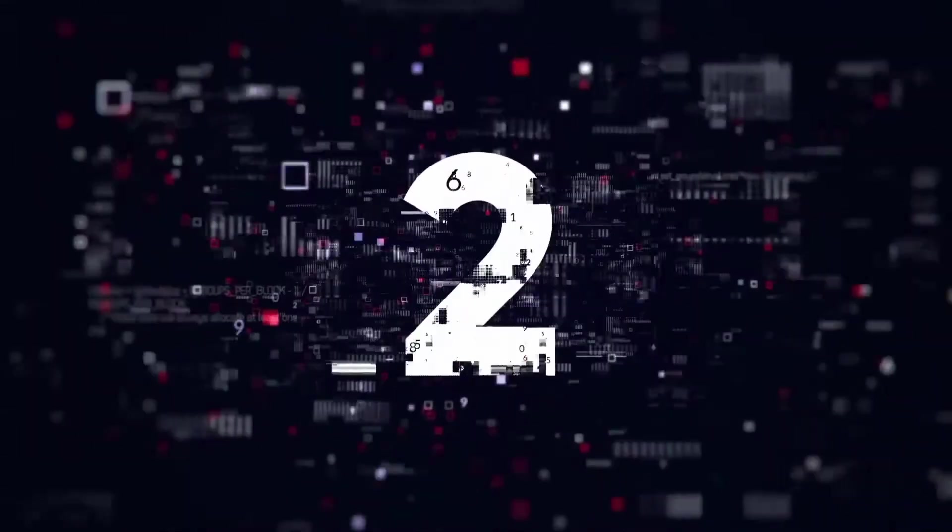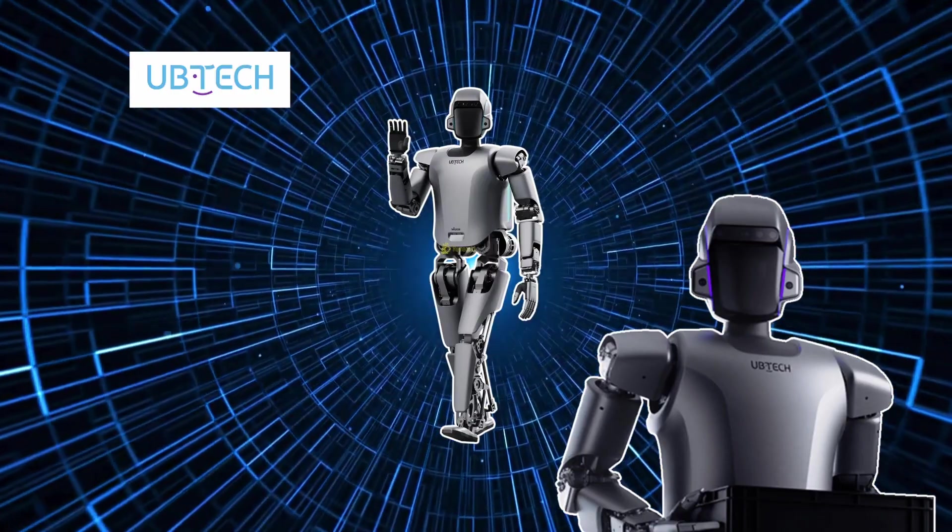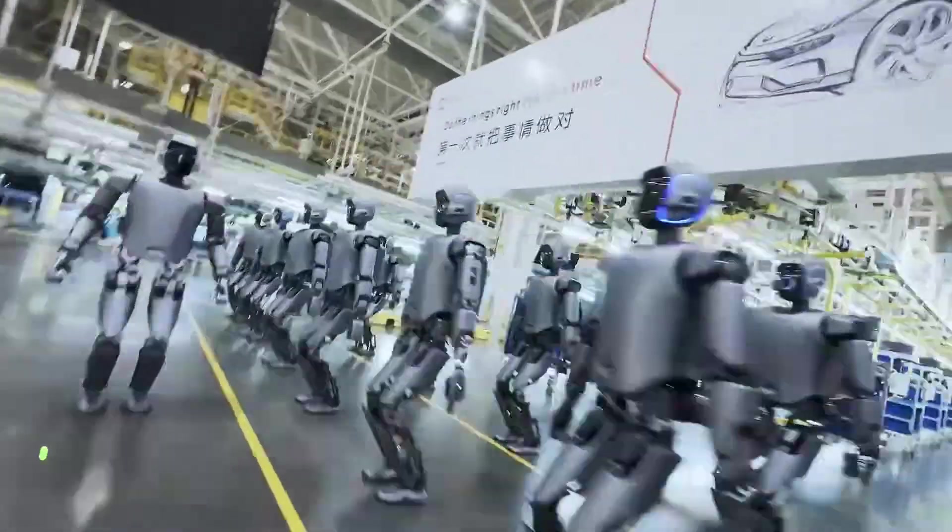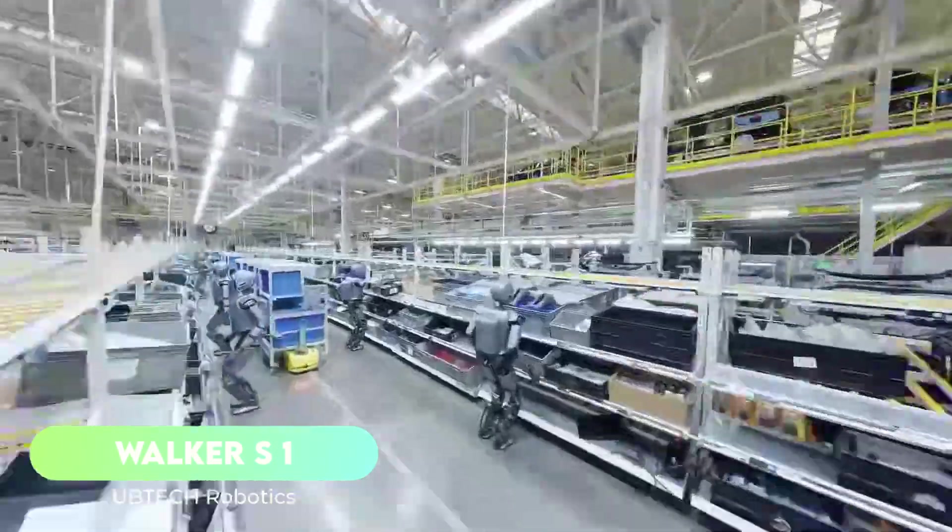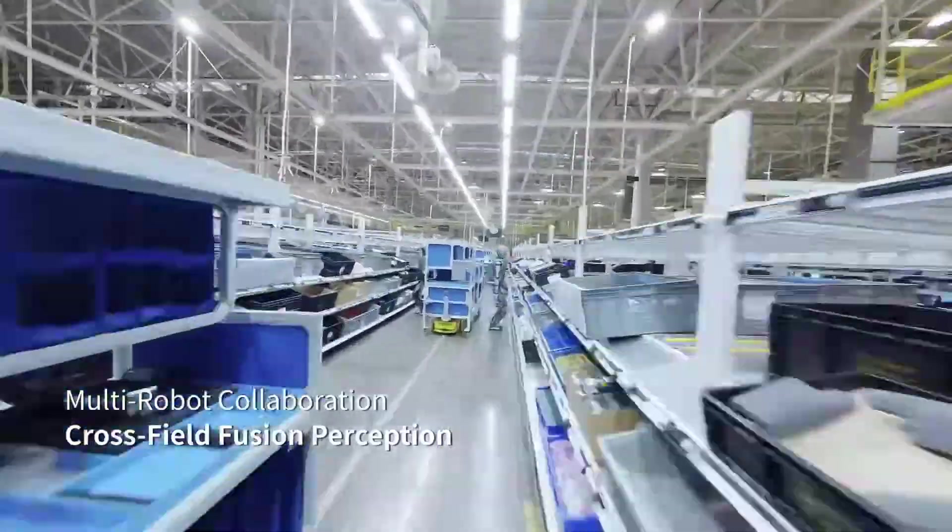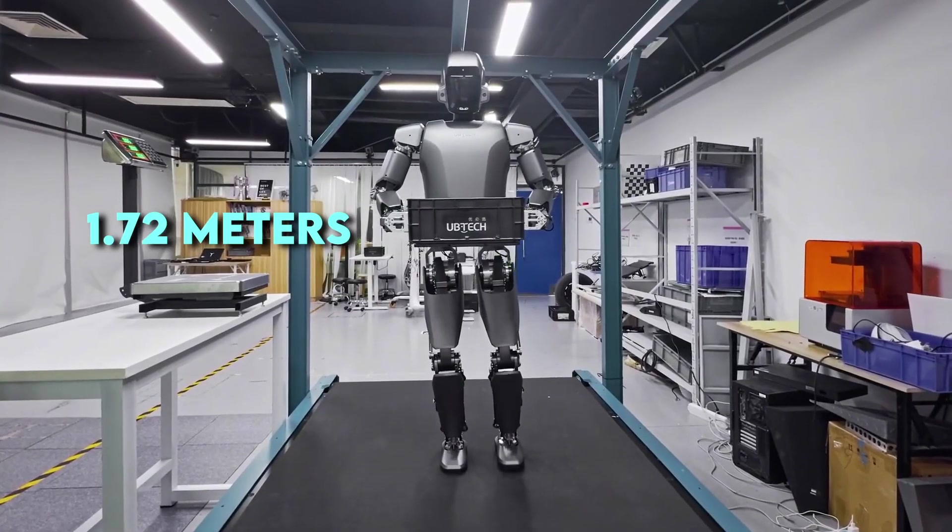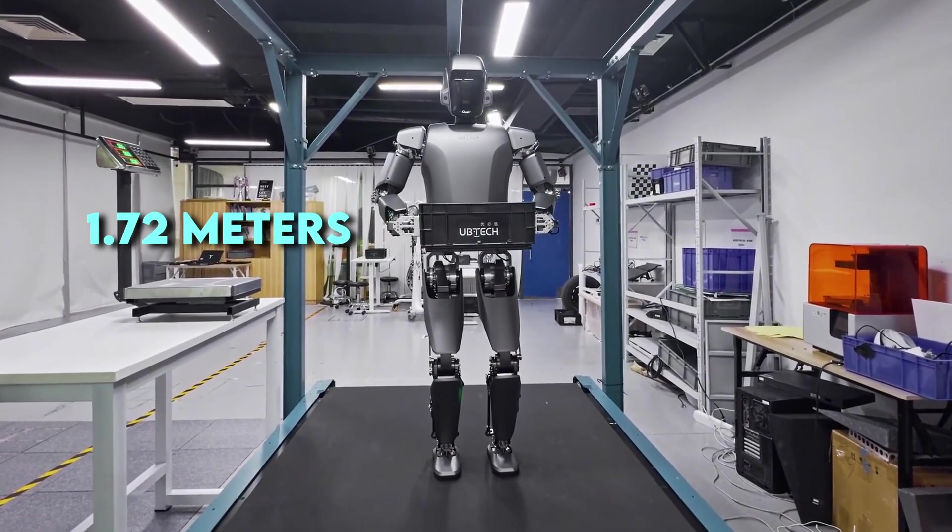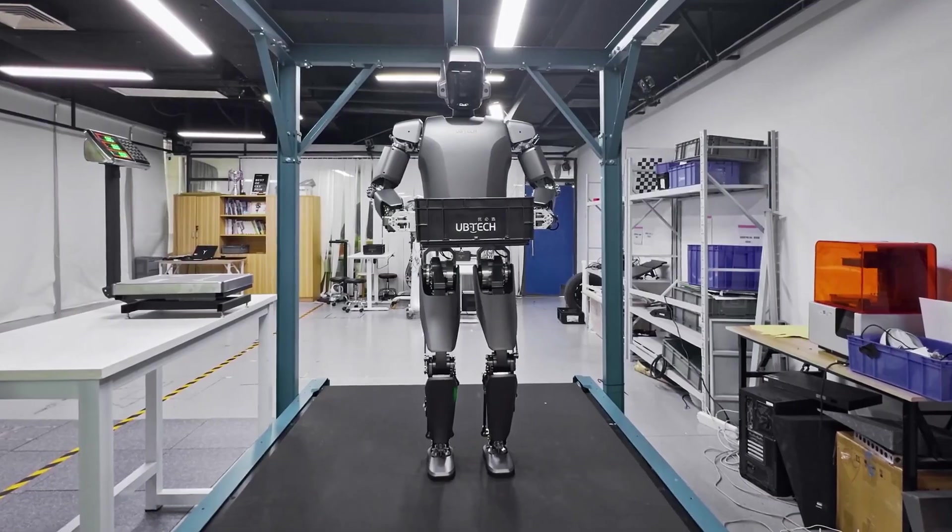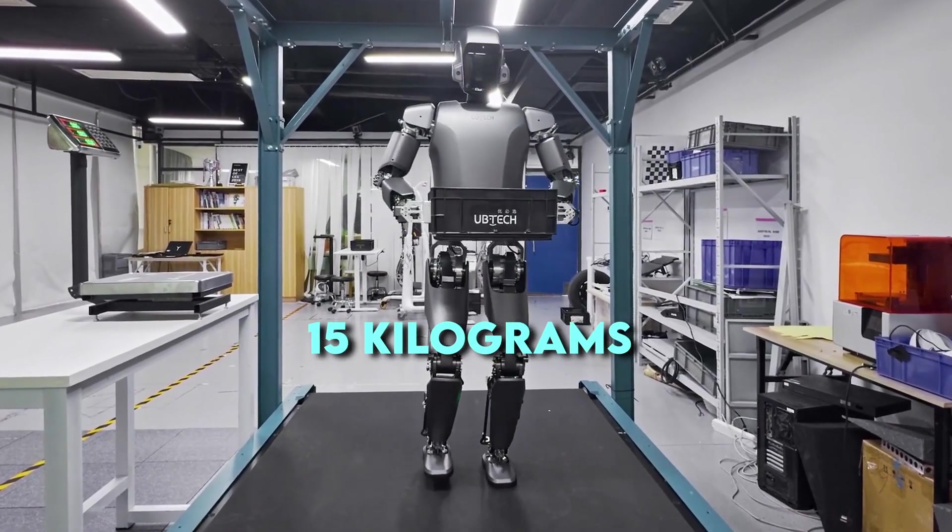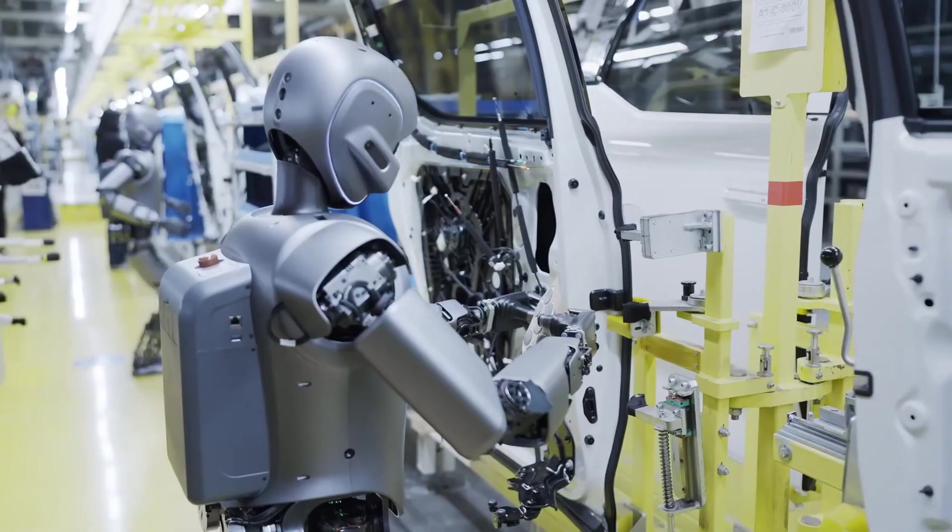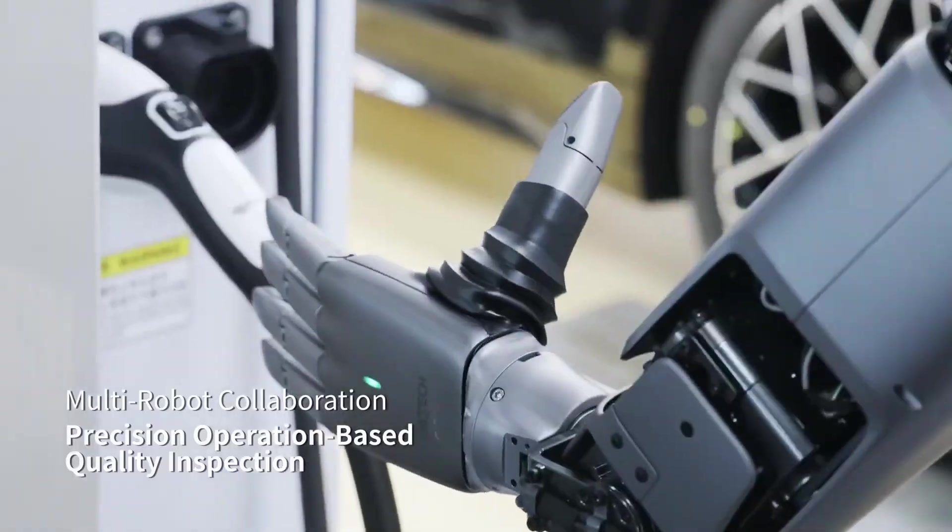Number 2: Walker S1 by UBTech Robotics. UBTech's Walker S1 entered the spotlight in 2024 as a full-scale humanoid targeting industrial work. At 1.72 meters tall and 76 kilograms in weight, it is built for strength, capable of lifting up to 15 kilograms while maintaining stability. Walker S1 is already being tested at top-tier facilities including Foxconn, BYD, Geely, and the Audi-FAW joint venture. It handles tasks like inspection, screw tightening, and packaging.